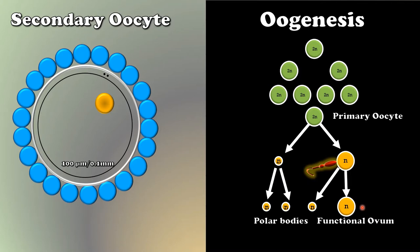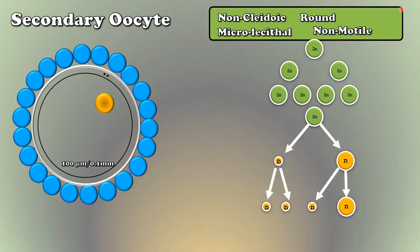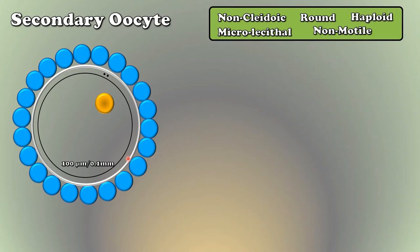Students, I have made a complete video on oogenesis. Please watch that video. Alright, ovum is 100 micrometer or 0.1 millimeter in diameter. The female gamete is released from ovary as secondary oocyte.